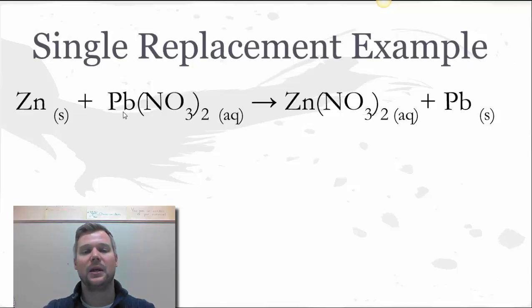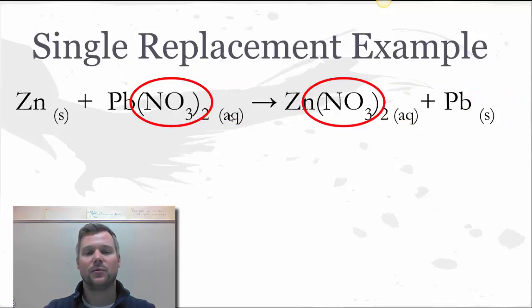My next particle Pb starts out as aqueous finishes solid. That did change. That was important. And then nitrate starts out as aqueous and then the symbol attached to it's also aqueous. This is like the soccer mom dropping off the kid here. Because this doesn't change we can throw a circle around those nitrates. Those are going to be the particles we're going to end up omitting later on.